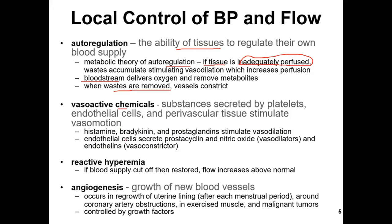If we talk about the endothelial cells — endothelial cells are part of the capillaries themselves. They secrete prostacycline and nitric oxide, and we know that these two things vasodilate our capillaries. Endothelial cells will cause vasoconstriction. So you should know this: if we need vasoconstriction, we have endothelial cells; if we need to vasodilate our vessels, we have prostacycline, nitric oxide, histamine, bradykinin, and prostaglandins.